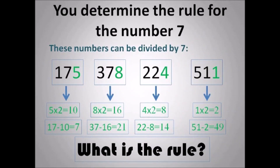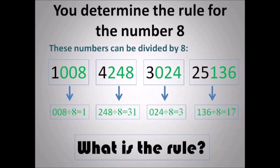And we go on for the number 7. Take 175: I multiplied the 5 by 2, got 10, then subtracted that 10 from 17. Did the same with 378 — multiply the 8 by 2, subtract from 37. Multiply 4 by 2, subtract from 22. Multiply 1 by 2, subtract from 51. There's a reason for doing that. Once you see what it is, you can state the rule.